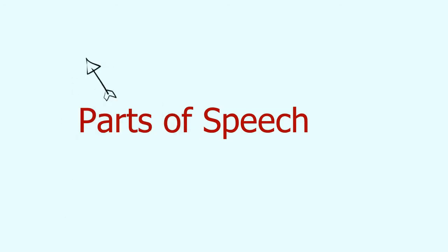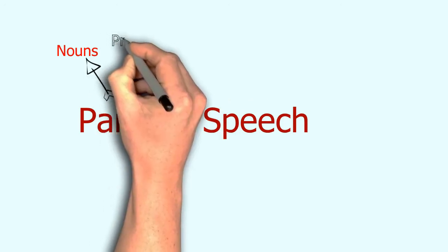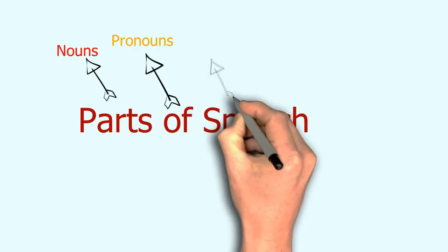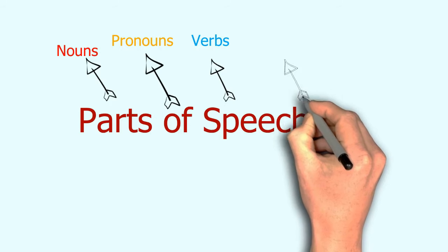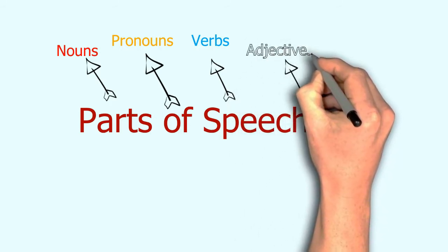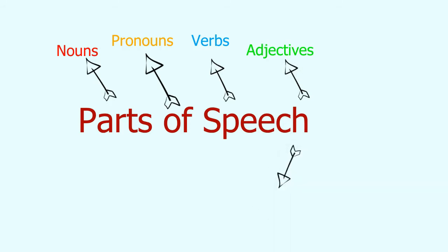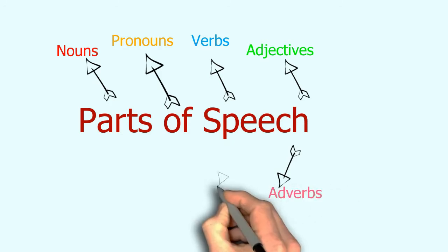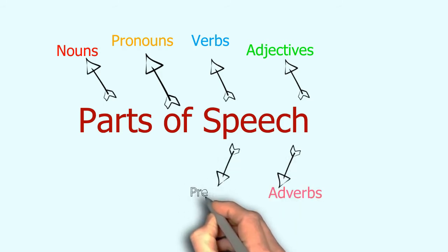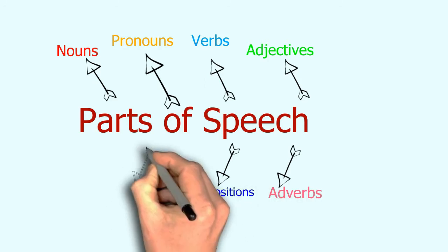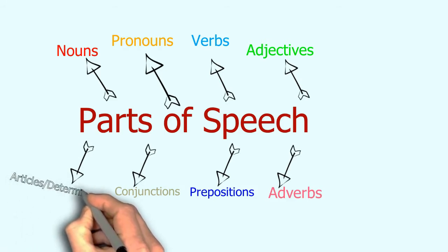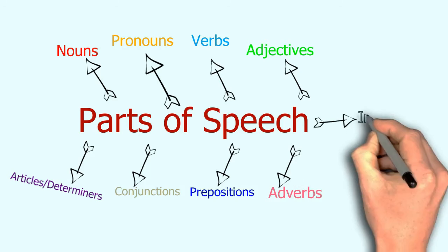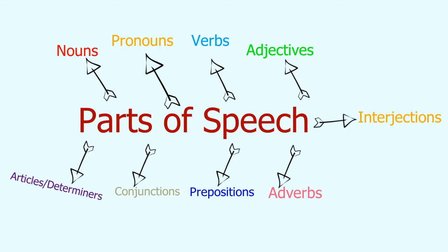The 9 types of parts of speech are: first, nouns; second, pronouns; third, verbs; fourth, adjectives; fifth, adverbs; sixth, prepositions; seventh, conjunctions; eighth, articles and determiners; and ninth, interjections. Now we will study each of these in detail.